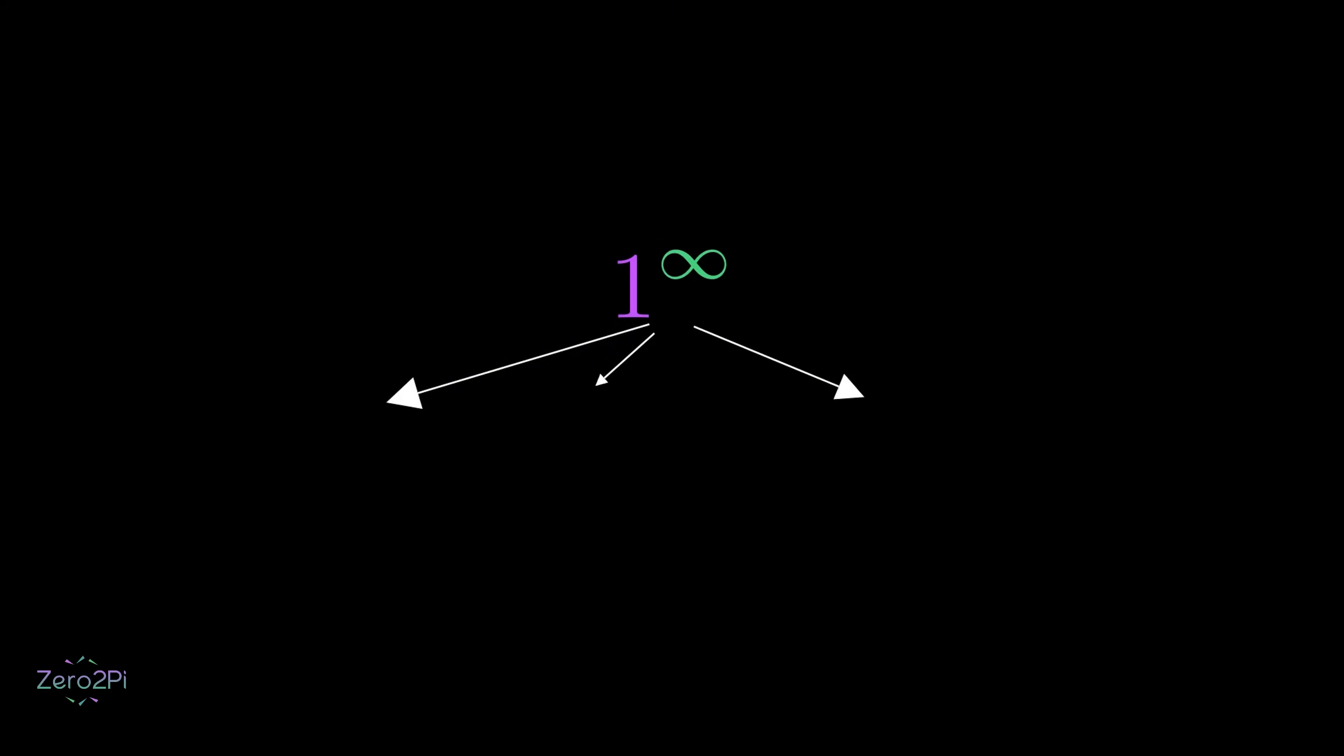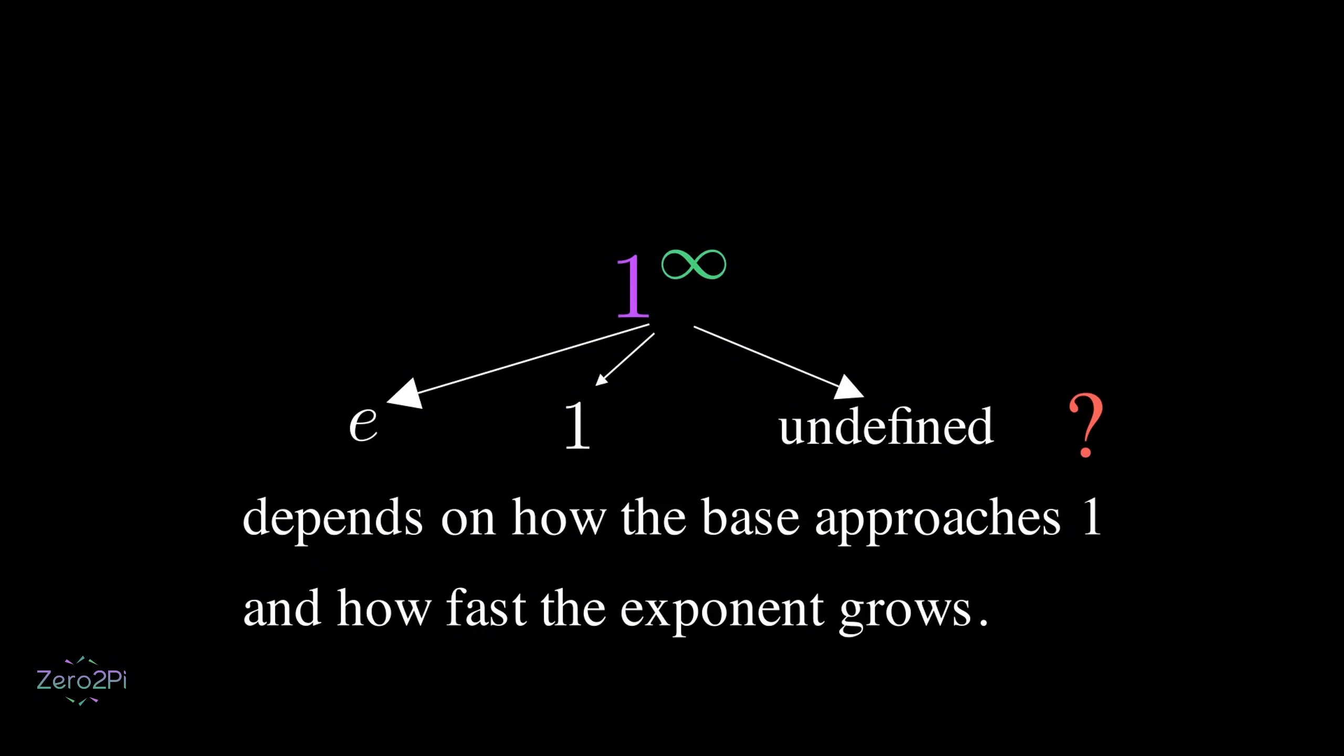So we can say that in regular algebra, 1 to the power infinity is undefined, and in calculus, sometimes it's 1, sometimes it's Euler's number, depending on how the base approaches 1 and how fast the exponent grows. Subscribe this channel for more videos like this.